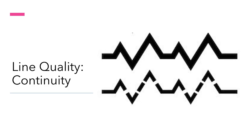Line quality number three is continuity or linear flow. This also aids in our understanding of direction — related, but not the same thing as direction or orientation. The continuous line on the top tends to generate a stronger sense of direction than the broken lines on the bottom. You can see that it's more cohesive on the top.